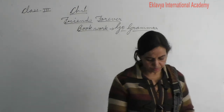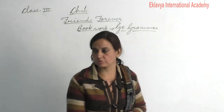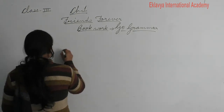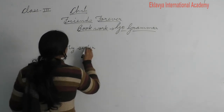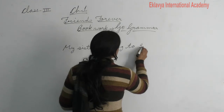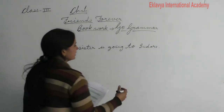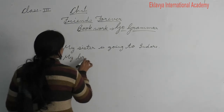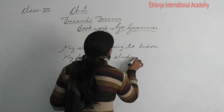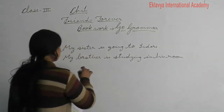Now see in your book also: a declarative sentence simply makes a statement or expresses an opinion. In other words, it makes a declaration. Examples of these sentences are: 'I did not want to let them down,' 'My sister is going to Indore.' Like this — so this is the declarative sentence. You can form one like: 'My brother is studying in his room' — you can say this is a declarative sentence.